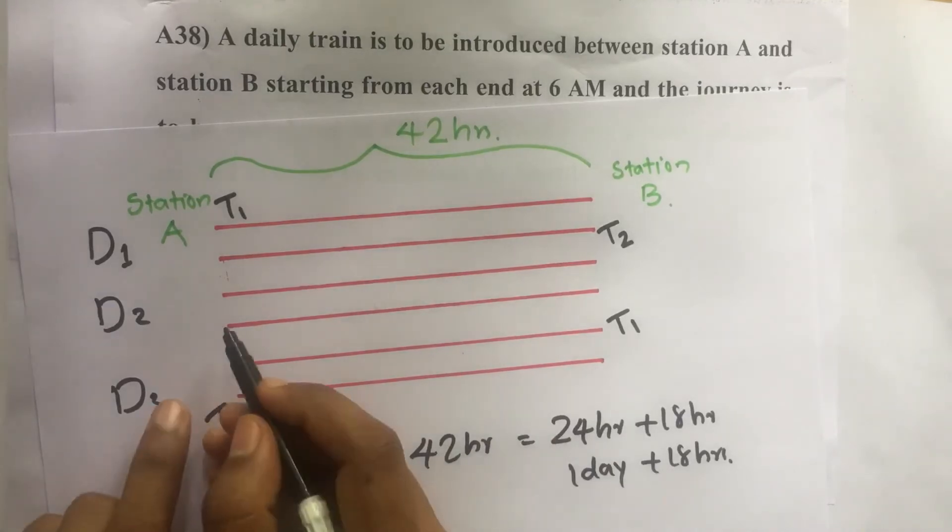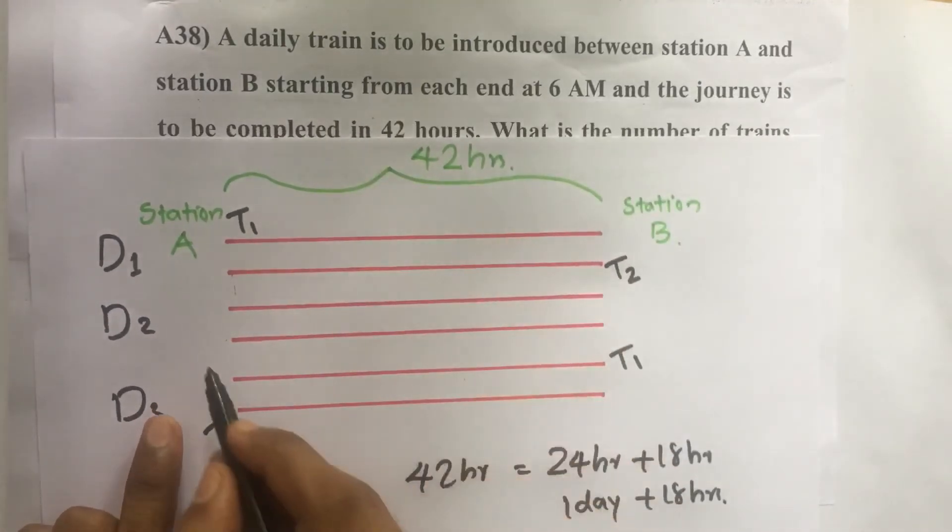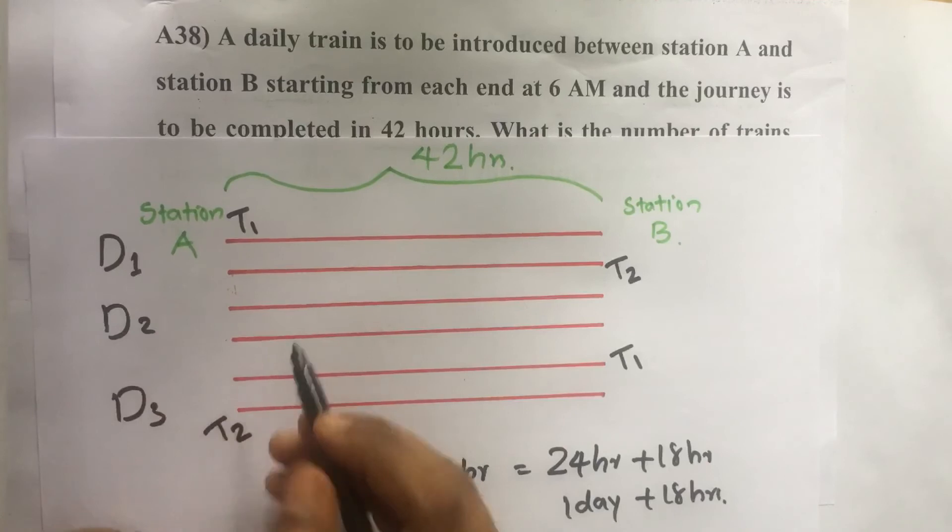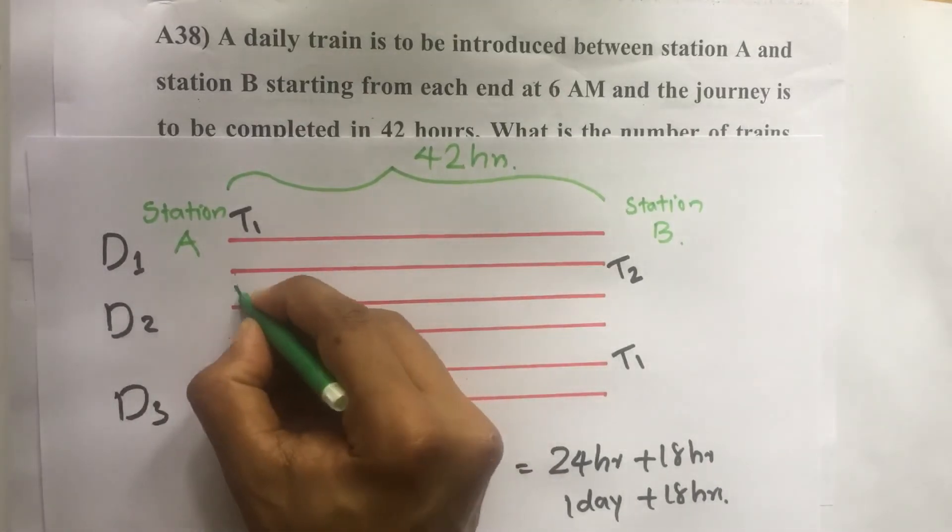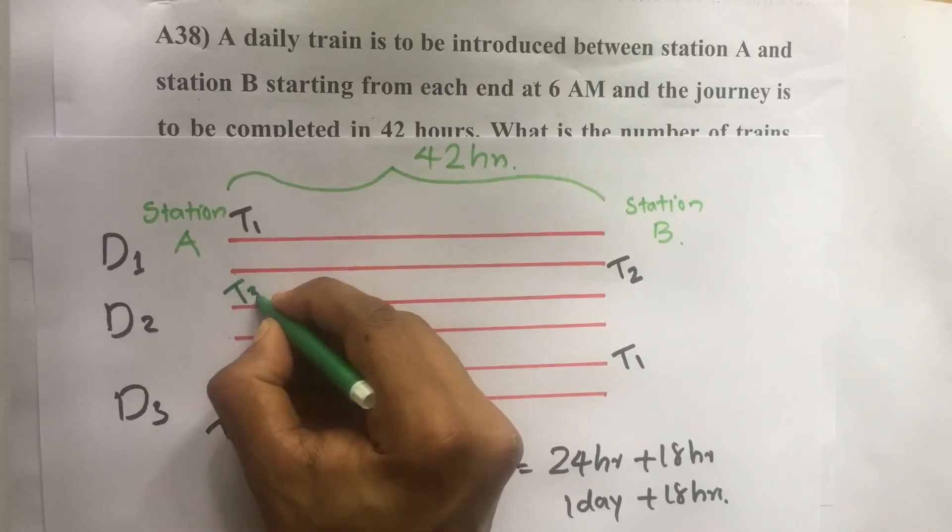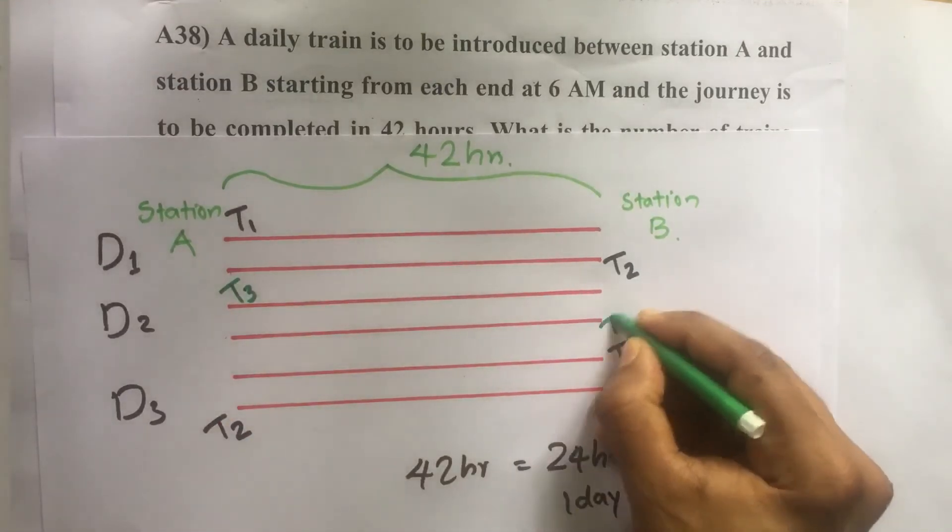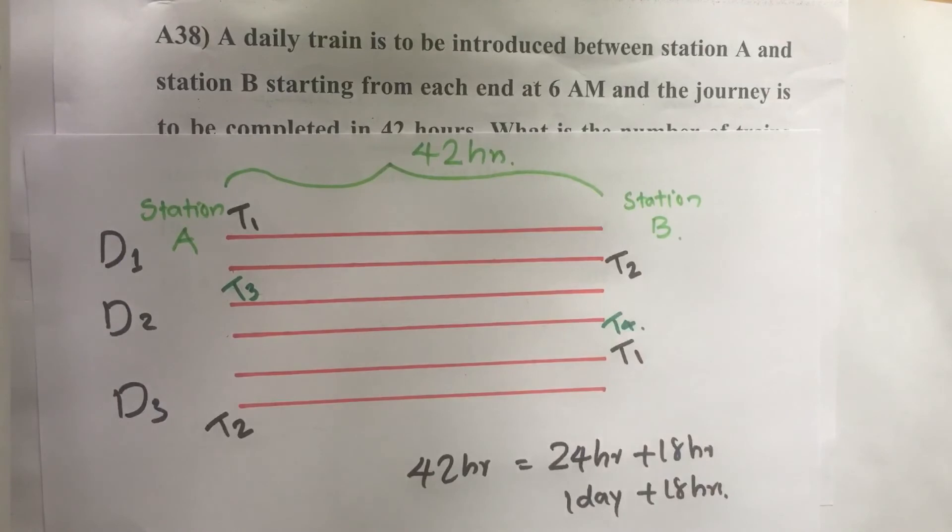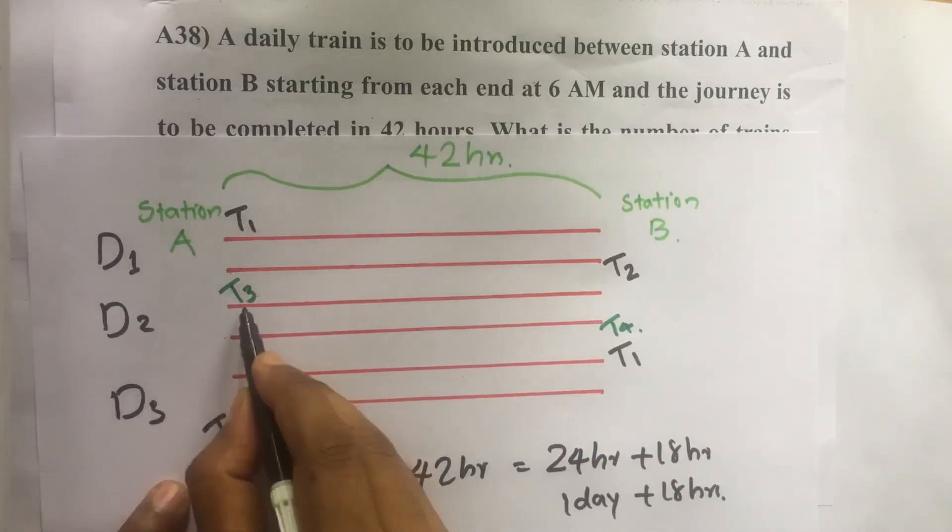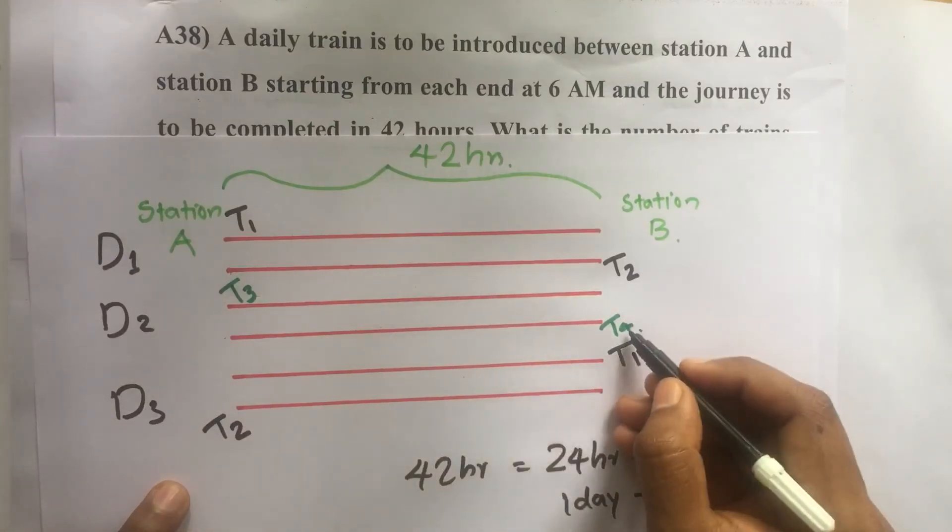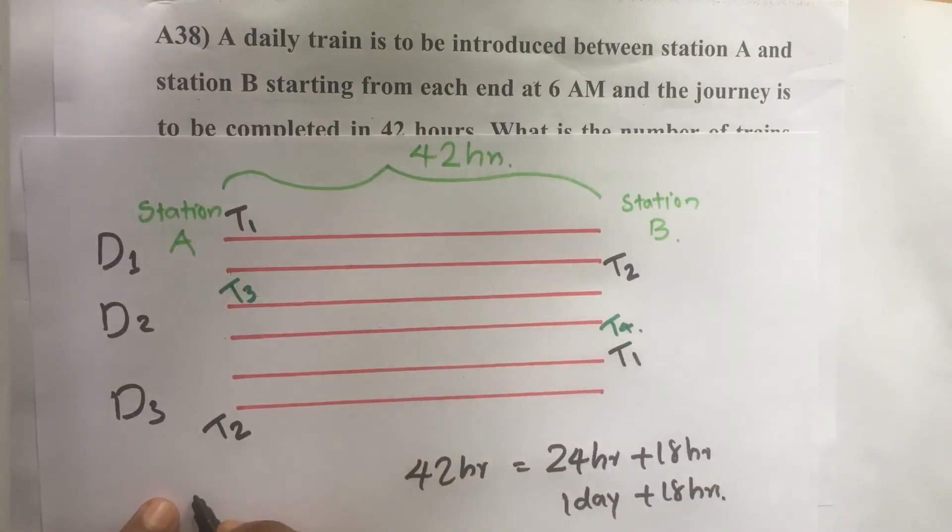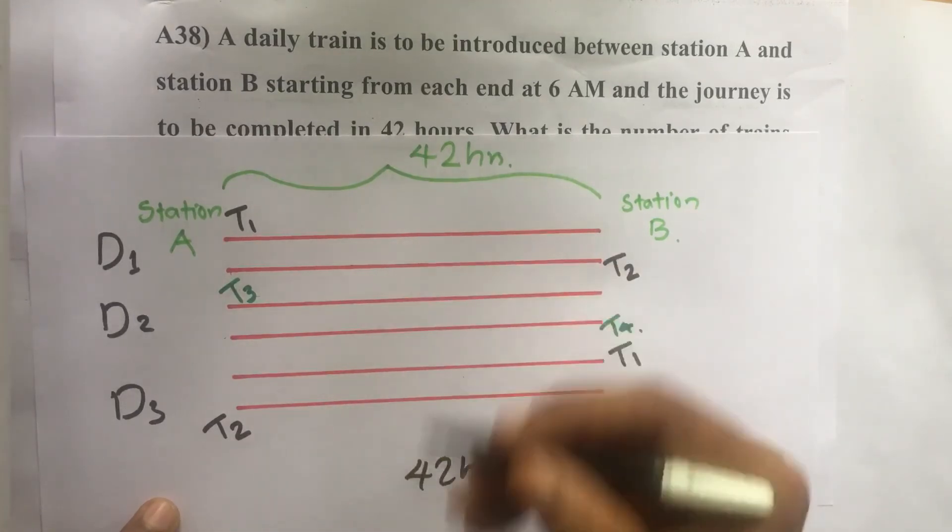So to maintain it as a daily service we have to introduce another train on day 2, that is T3 here and T4 here. Again after 2 days on day 4, this T3 reaches at station B and this T4 reaches at station A. So then that cycle will continue.